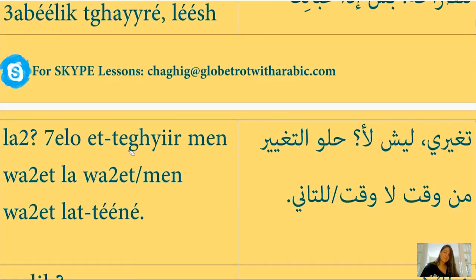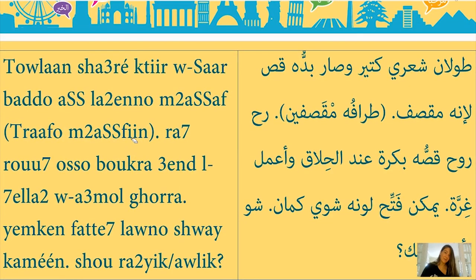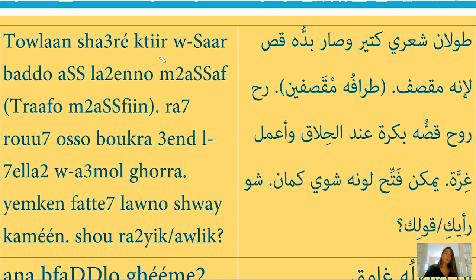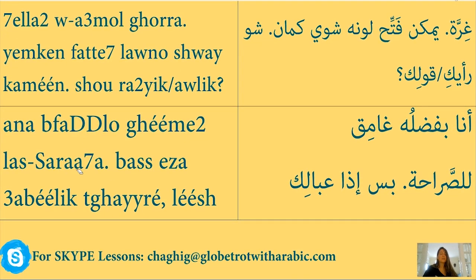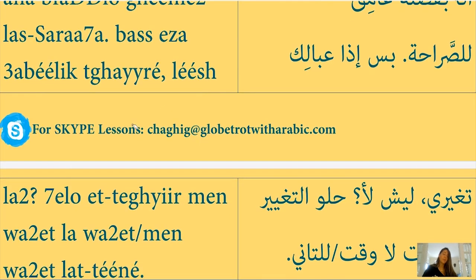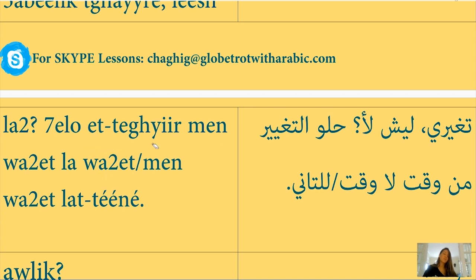Let's repeat slowly and translate. 'Tool on sha'ri k'tir' — my hair has grown a lot. 'Wussar baddo us' — and it needs a haircut. 'La'anno masfeh' — because it has split ends, or 'trafoh massfeen' — its ends are split. 'Rah rooh 'usso bukra' — I will go cut it tomorrow. 'Ind el-halla'' — at the hairdresser. 'W a'mel ghrra' — and do a fringe. 'Yimkin fata7 lono shway, kaman, shu ra'yik / shu 'oullik' — I might lighten its color a bit too, what do you think? 'Ana bfaddel ghayim la-ssara7a' — I prefer it dark, to be honest. 'Bass iza 3a balik tghayri, laish la — helo l-taghyir min wa't la wa't' — but if you feel like a change, why not — change is good from time to time. ''Oullik' — you think so.